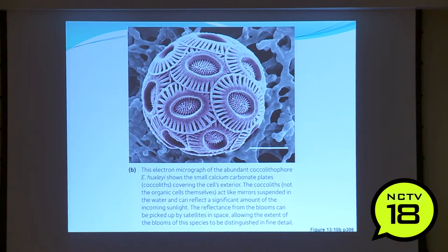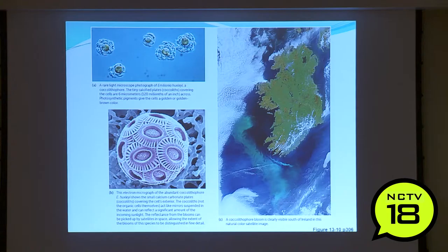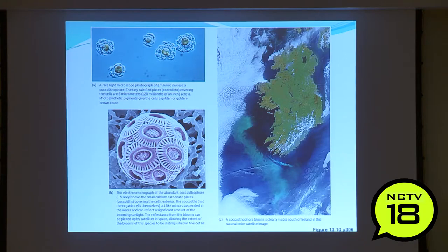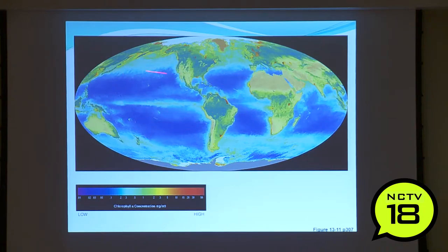Here's an electron micrograph of a coccolithophore showing all its calcium plates. Here is a large coccolithophore bloom south of Ireland in a natural color satellite map — river systems coming off shore causing a bloom of coccolithophores, which are usually not a problem, unlike dinoflagellates. And here again are those areas where phytoplankton are going to bloom.